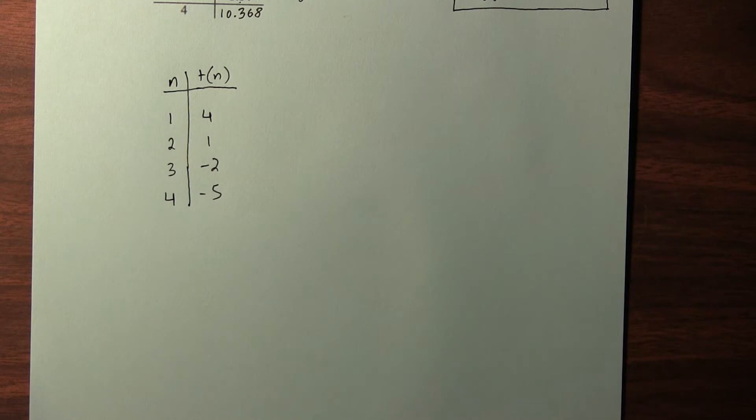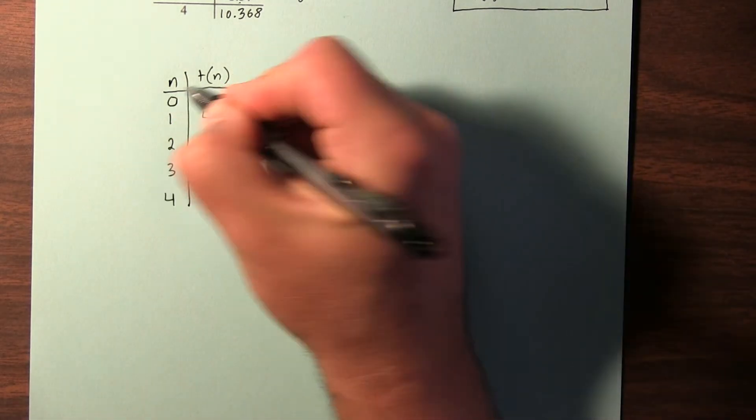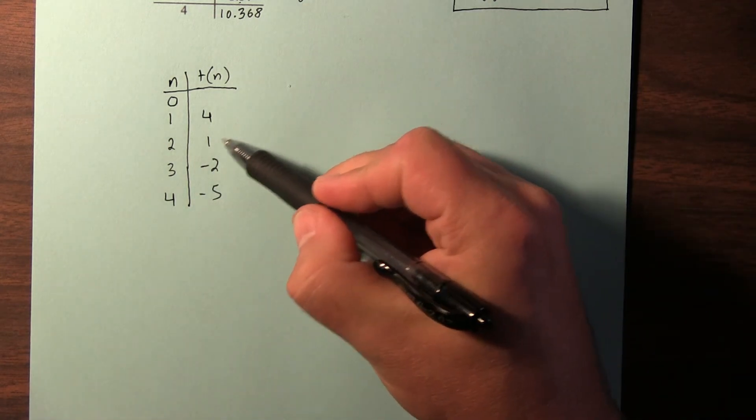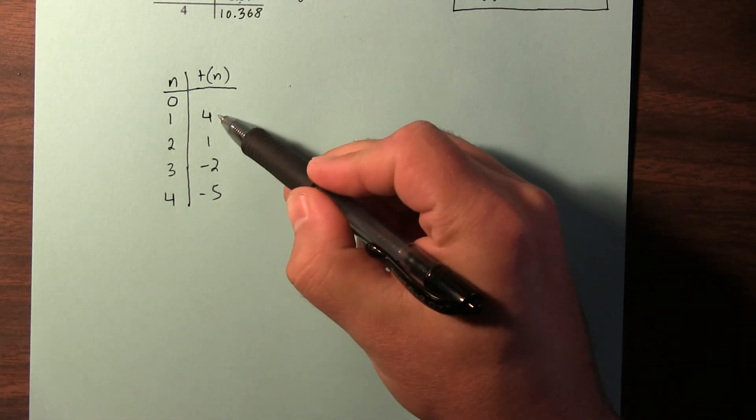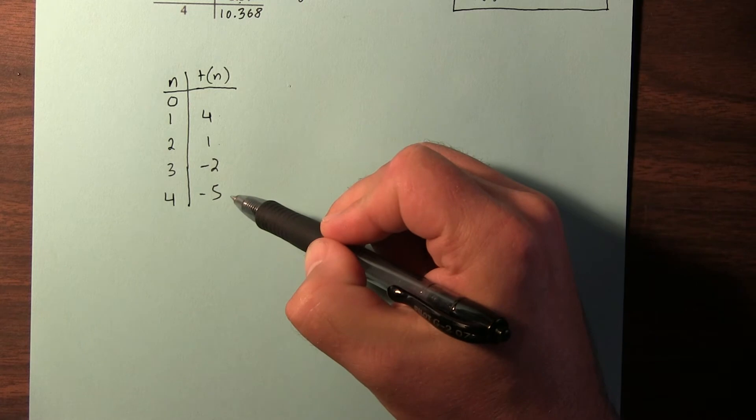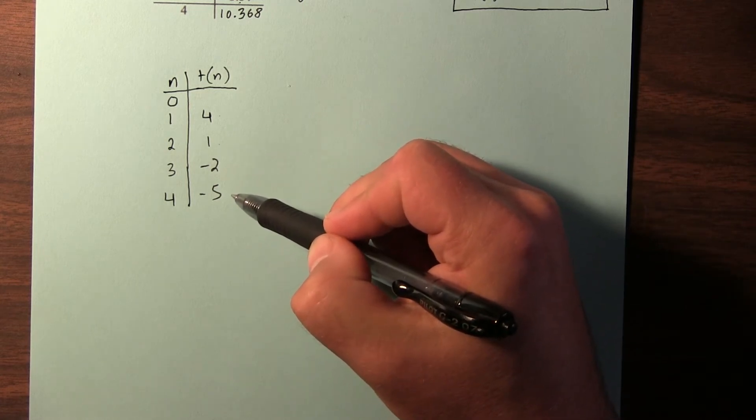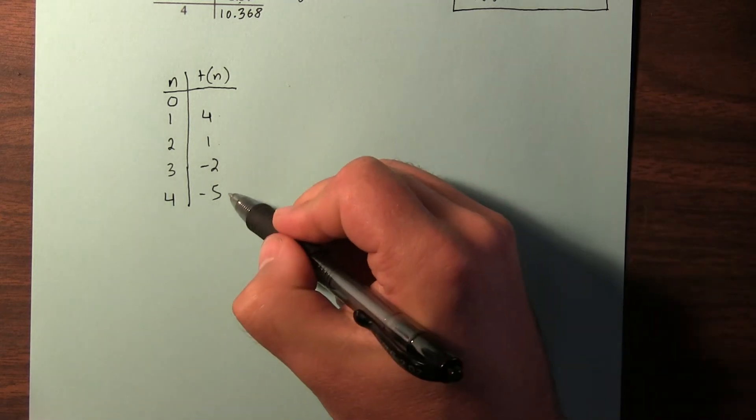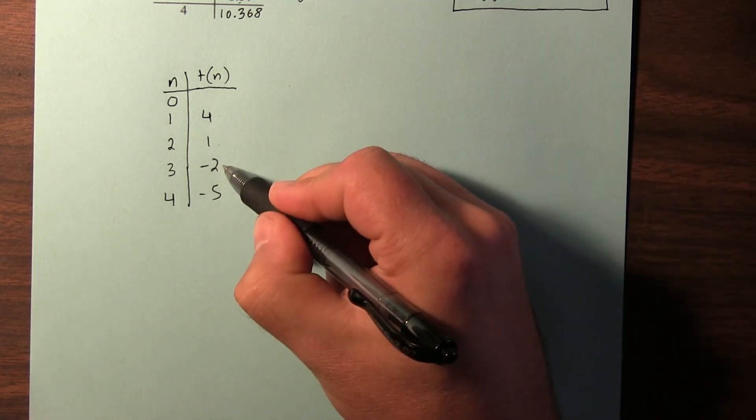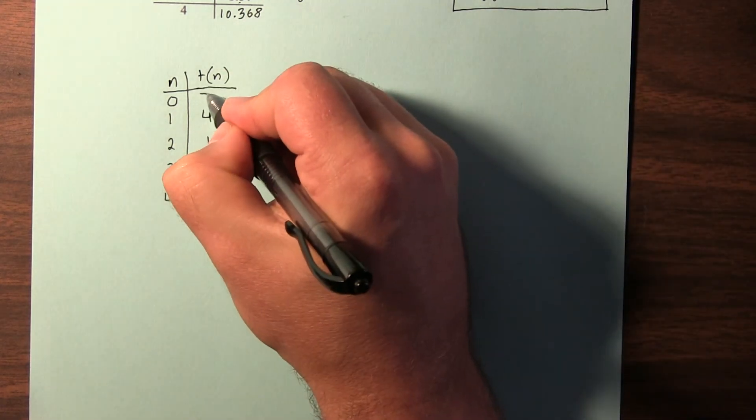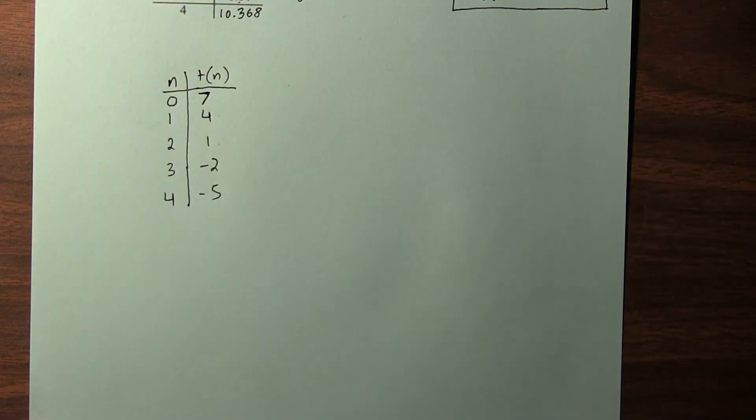What I actually am interested in is the 0th term, usually called the initial term. So to get the next term, I'm subtracting 3, minus 3, minus 3, minus 3. If I want to go up in the table, instead of subtracting 3, I need to do the opposite. I need to add 3. So negative 5 plus 3 is negative 2, plus 3 is 1, plus 3 is 4, plus 3 is 7. The initial term is actually 7. That's where this starts off.